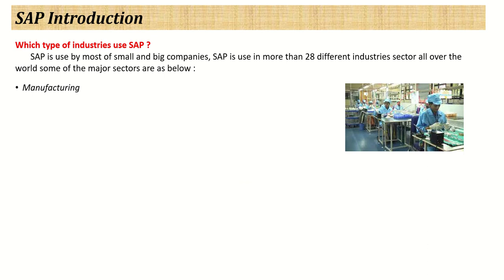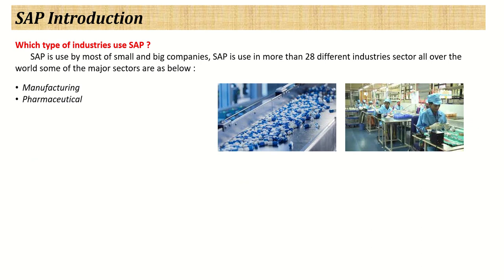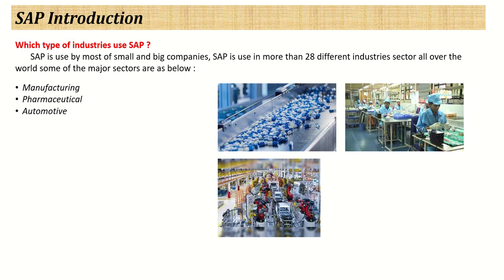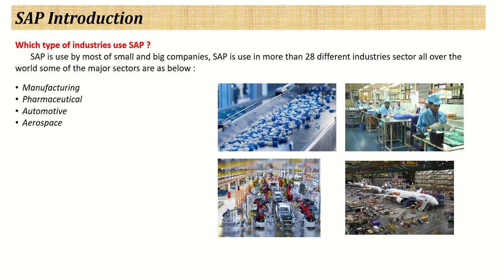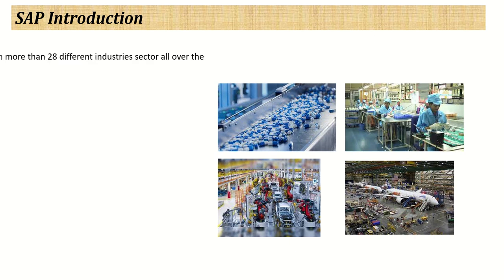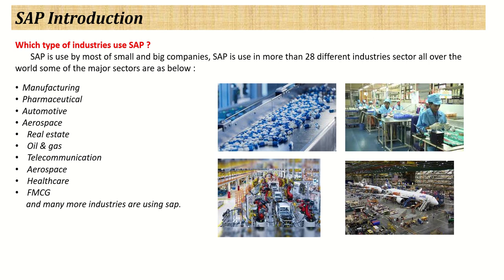Now let's see which types of industries use SAP. SAP is used by almost all small and big companies in more than 28 different industry sectors worldwide. Examples include manufacturing companies, which use SAP to manage all their operations, pharmaceutical companies, the automotive industry, aerospace, and many more industries where SAP is running successfully.